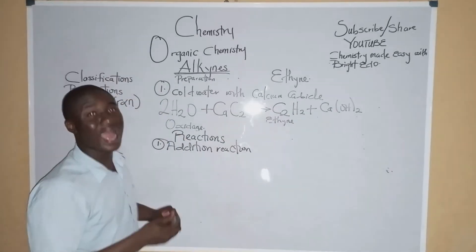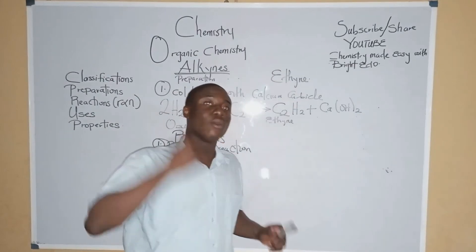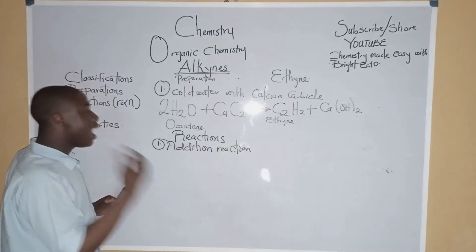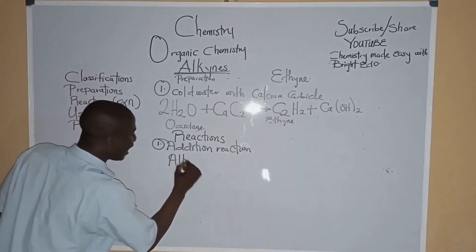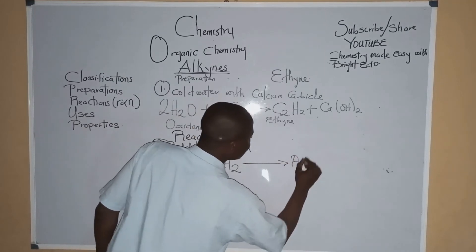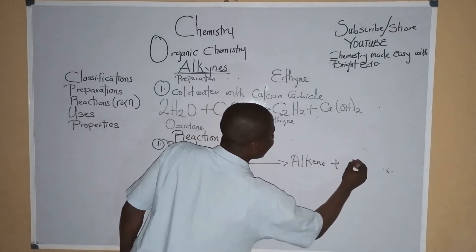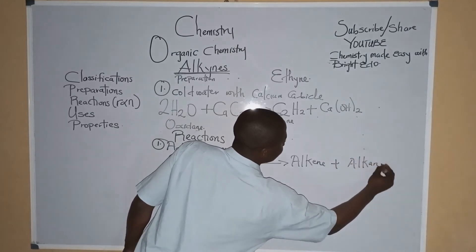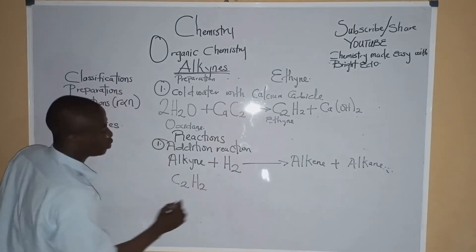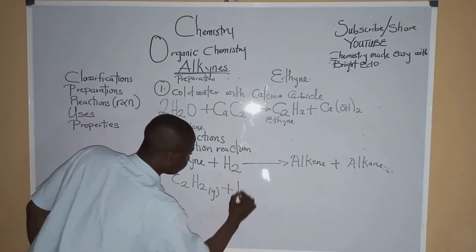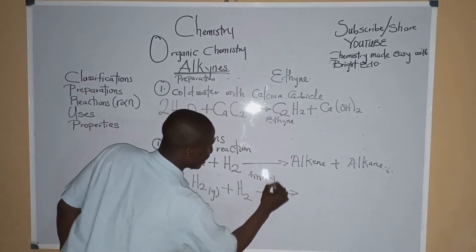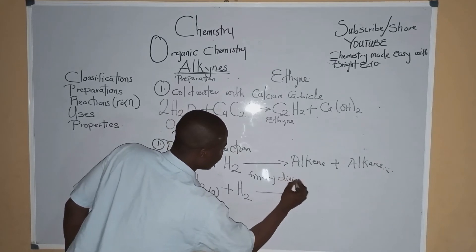Alkynes react with hydrogen to form alkenes and alkanes. This is a reduction reaction. For example, alkyne C2H2 reacts with hydrogen gas. The catalyst used in this process can be finely divided nickel.